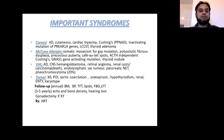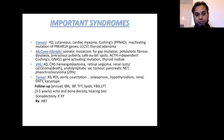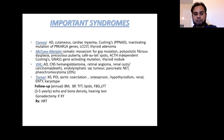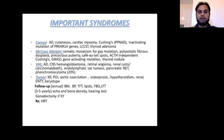Third is von Hippel-Lindau disease, which is again autosomal dominant. It can have CNS hemangioblastoma, retinal angiomas, renal cysts or carcinoma — which is the most common cause of death in these patients — endolymphatic sac tumor, pancreatic neuroendocrine tumors, and pheochromocytoma. We briefly discussed VHL when covering pheochromocytoma, as it is one of the genetic diseases that can involve pheochromocytoma. An important point is that renal carcinoma can cause death.